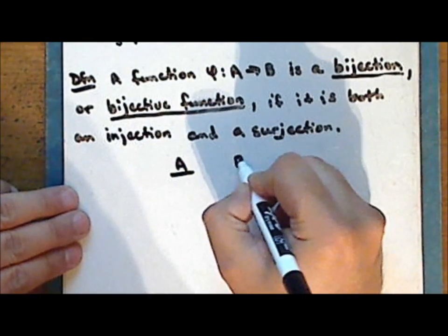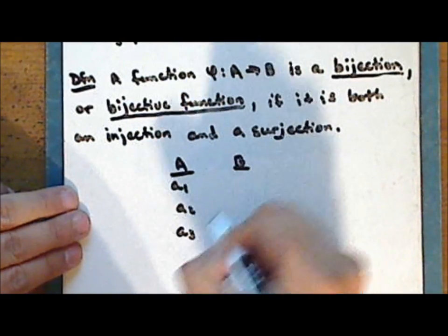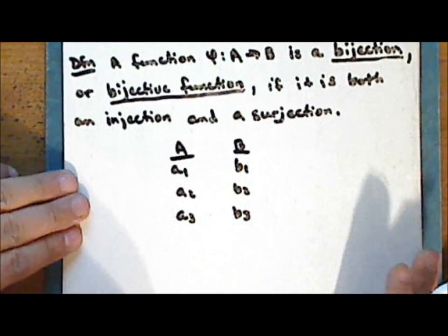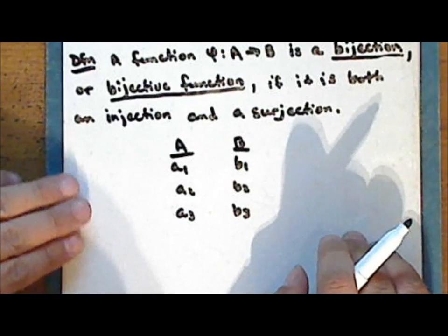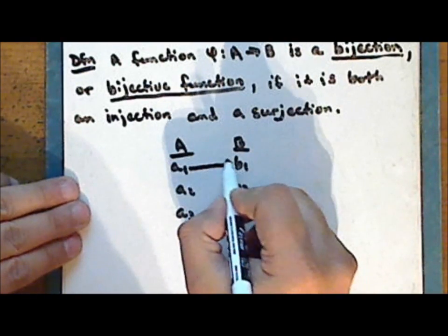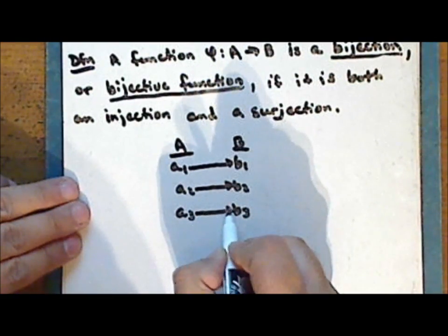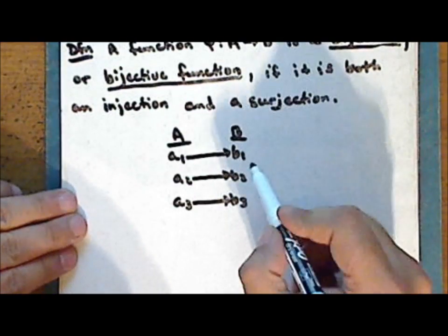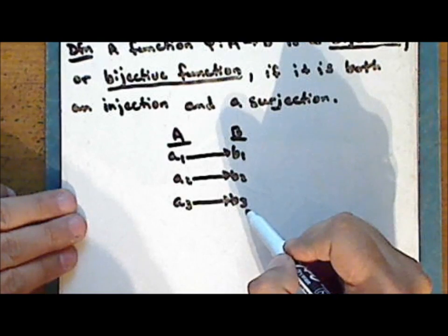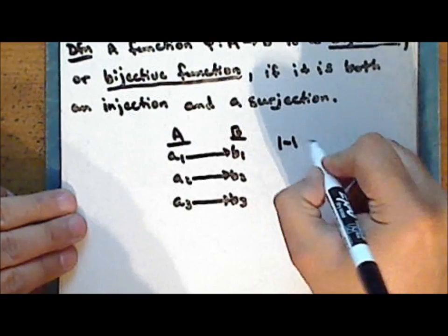Once again with the map diagram: a function from A to B is a bijection if it is both an injection, which means that every element in the domain A is mapped to a unique element in the codomain B, and is also a surjection, meaning each of the elements in the codomain B are mapped onto. Another term for a bijection is a one-to-one correspondence.